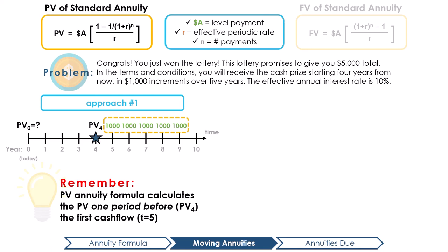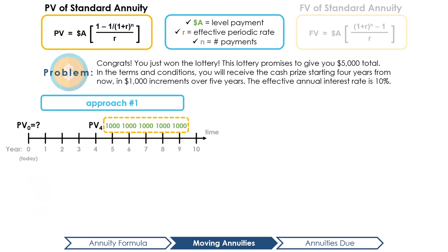Pause the video here and try to calculate PV4 for yourself. Mapping the values identified in the problem with the variables in the formula, A equals $1,000, as $1,000 is the amount paid at the end of each year, r equals 0.1, the effective annual interest rate represented as a decimal matching the annual cash flows, and n equals 5, as the payments occur over five years. Plugging this into the PV formula, the present value at time 4 equals $3,790.79.